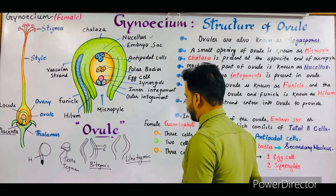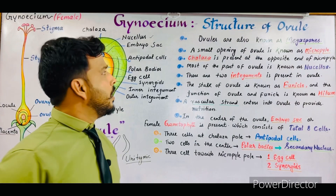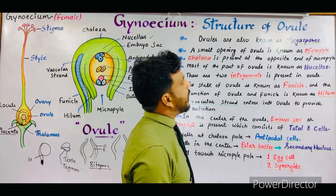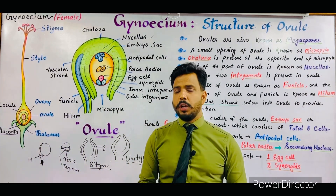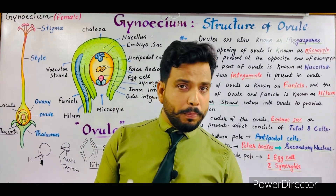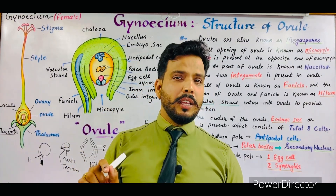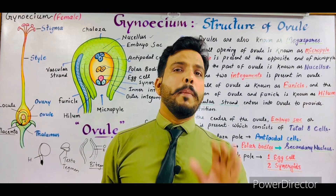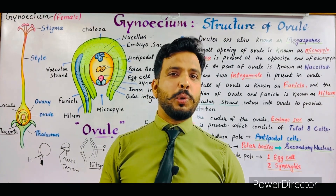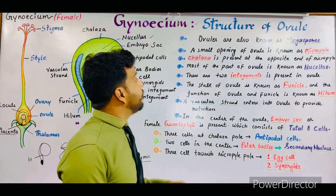Some important points related to the structure of ovule: ovules are also known as megaspores, and the formation of ovule or megaspore inside the ovary is termed megasporogenesis. The topic of megasporogenesis will be discussed in detail in the next video.